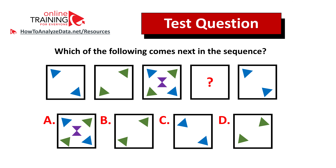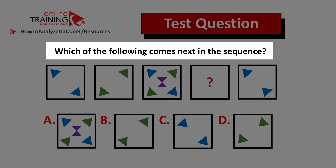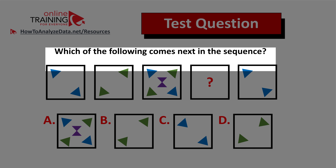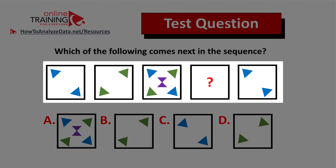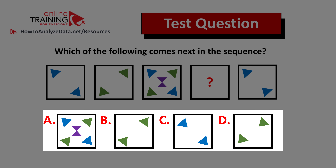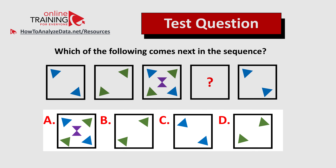Here's an interesting question which tests your pattern recognition, logical reasoning, and analytical skills. Which of the following comes next in the sequence? You're presented with a sequence of five squares which have triangles inside. One square is missing triangles, and you need to make a selection from four possible choices: A, B, C, and D. The answer is not obvious. Give yourself 10 to 15 seconds to see if you can recognize the pattern.